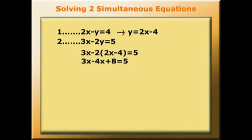3x minus 4x plus 8 equals 5. We got that by multiplying out the brackets. So x equals 3.